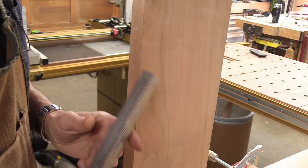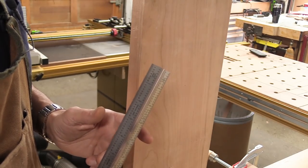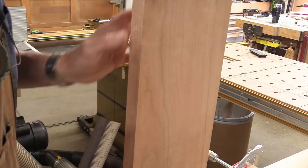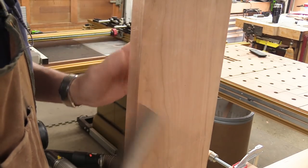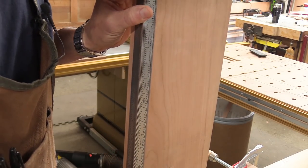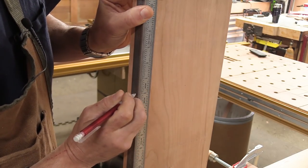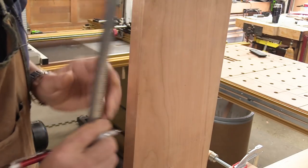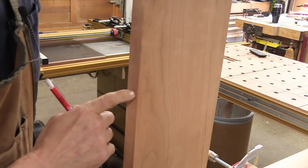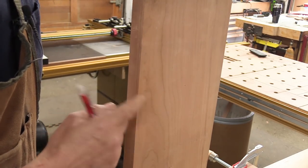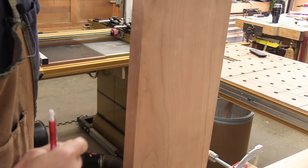Another thing that this ruler really excels at is making marks on vertical surfaces. Let's say I need to make a mark down 6 inches here for a cabinet slide. I can just put that in there, mark 6 inches, actually I can make a mark on both adjacent faces. Now I have a very accurate precise mark at 6 inches on both the inside and the outside face.